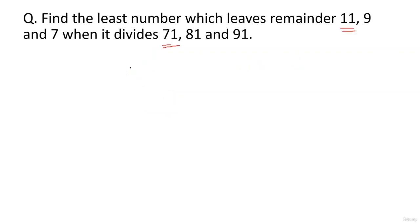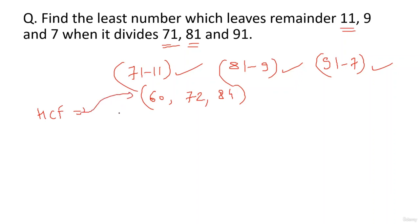So in the same way in this question, I can say that 71 minus 11 will be a multiple of the given number. 81 minus 9 will definitely be a multiple of the given number. And 91 minus 7 is 84. So 60, 72 and 84 is a number which is a common factor of these three. And it is the highest, so we take the HCF. We take the HCF of these numbers: 60, 72, 84.